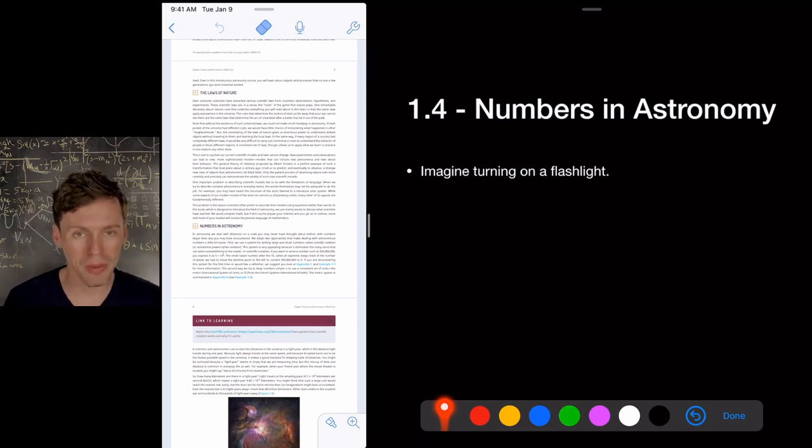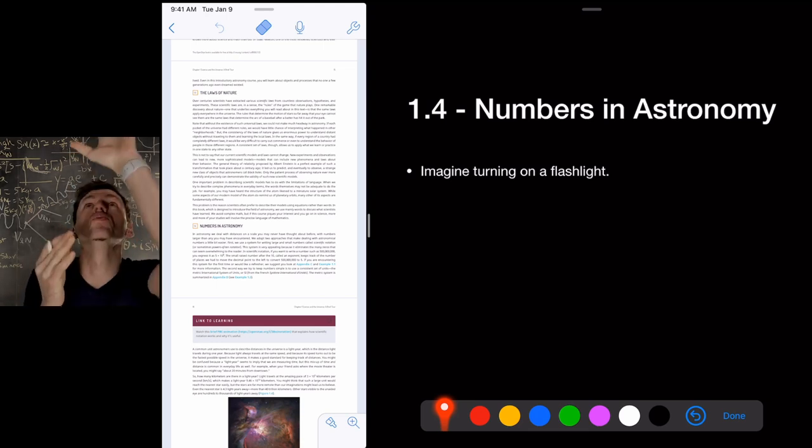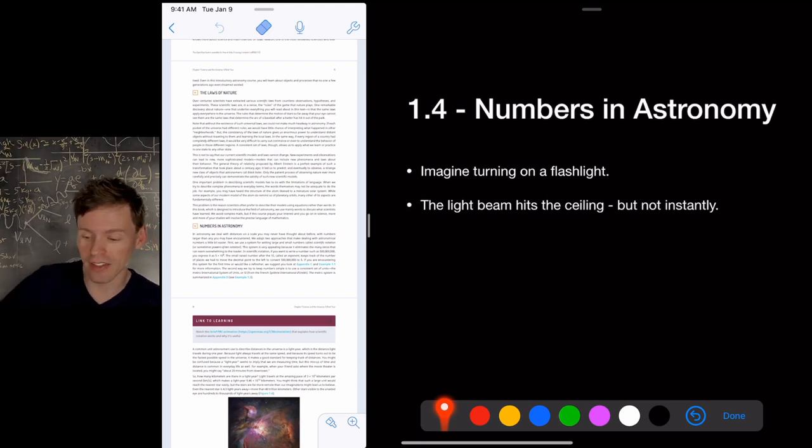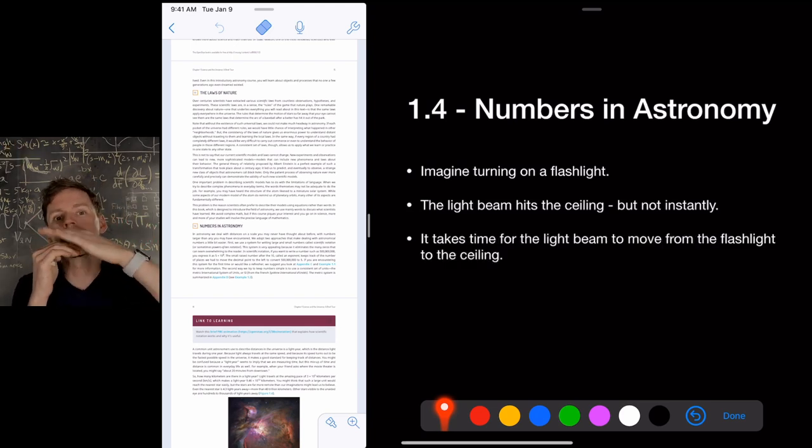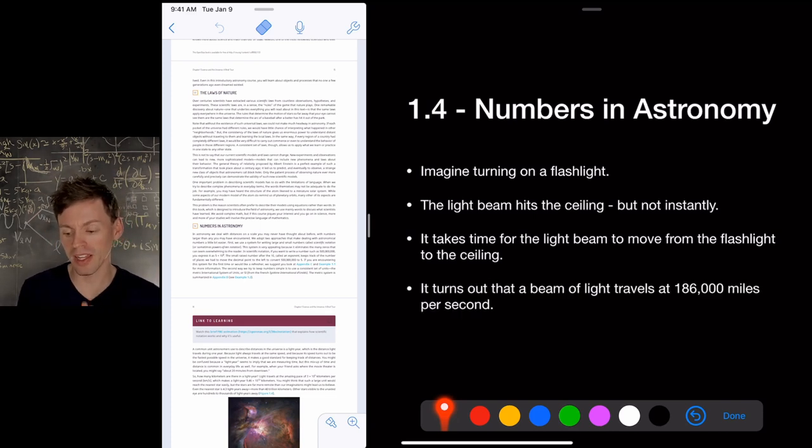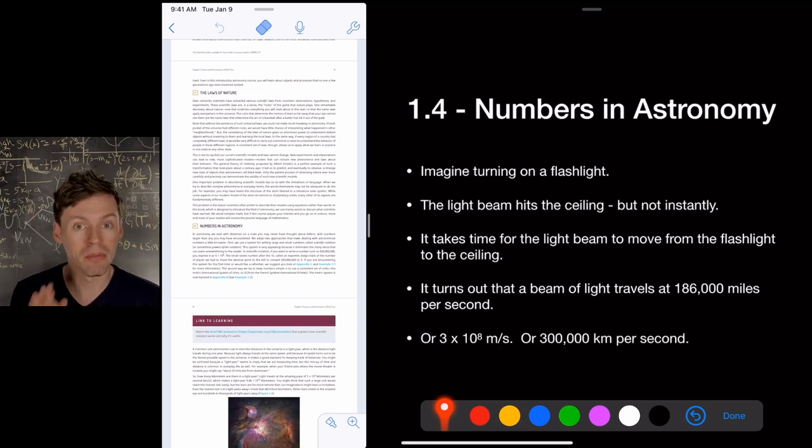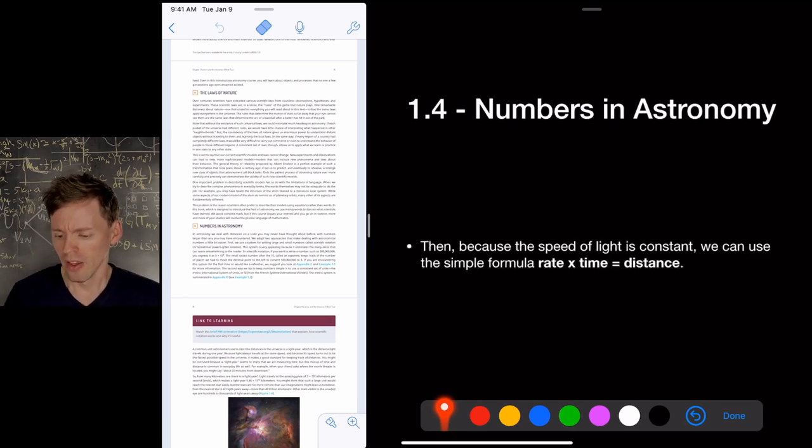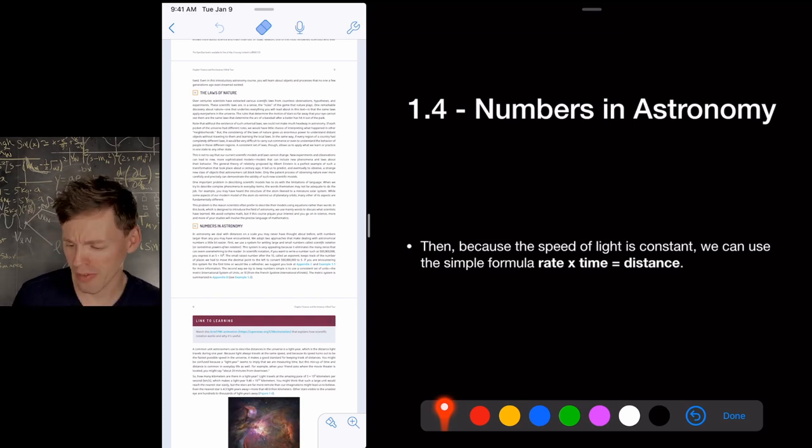So to solve this problem, we come up with a new unit. So we have to think about a flashlight for a second. Imagine taking a flashlight, clicking it on and the light beam goes and hits the ceiling. It doesn't get there instantly though. Okay. It takes time for the light to go from the flashlight to the ceiling. It turns out that a beam of light travels 186,000 miles per second, three times 10 to the eighth meters per second or 300,000 kilometers per second. That's very fast. Okay. We're not talking about 186,000 miles per hour, for example, 186,000 miles every second. Okay.